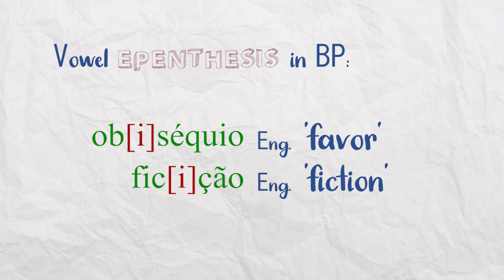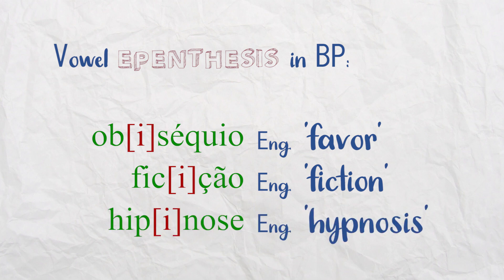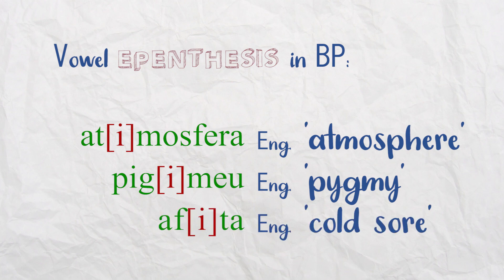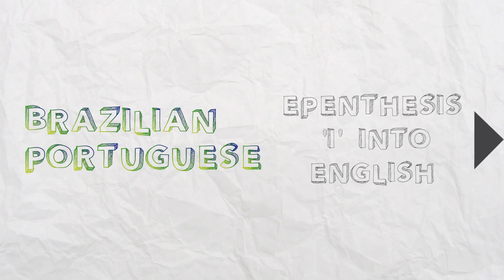'Fiction' — 'ficção' — becomes 'ficção.' 'Hipnose,' 'atmosfera.' It would be /at/, but in Brazilian Portuguese when you have /t/, you palatalize it and /t/ becomes /tʃ/, so it becomes 'atʃmosfera.' Also 'pigmeu,' 'afita.' So if you want to learn to speak Brazilian Portuguese, you need to learn how to speak it 'wrong' — meaning in a way that doesn't match the writing. We started with examples from English and now I'm giving more examples.